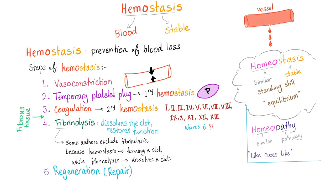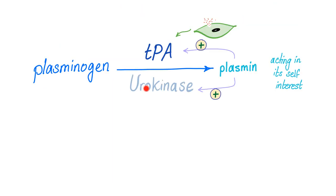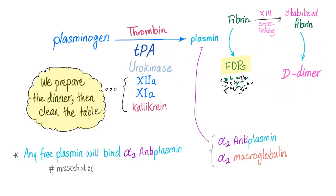Hemostasis has many steps and we are still stuck in step number four. Urokinase and TPA will activate plasminogen into plasmin. Plasmin will go back and activate TPA and urokinase to form more plasmin. Plasminogen is converted into plasmin via thrombin, TPA, urokinase, factors 11-12, and coagulacrine.